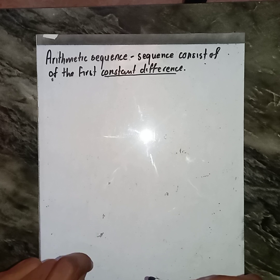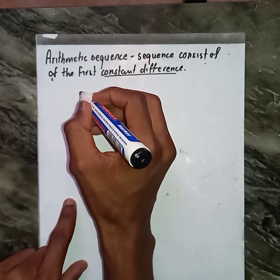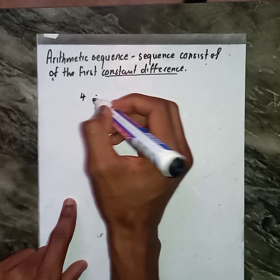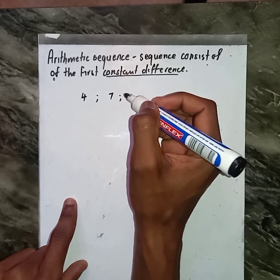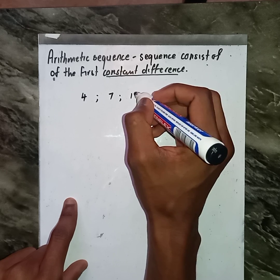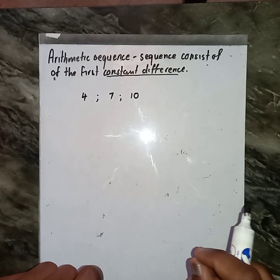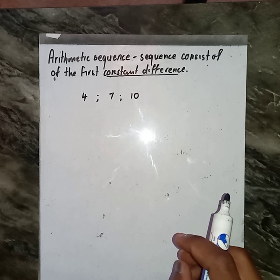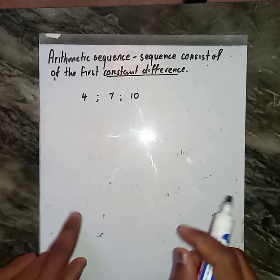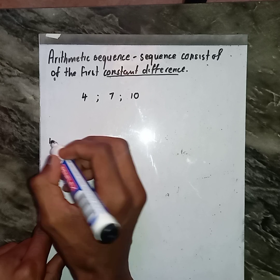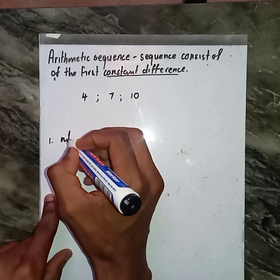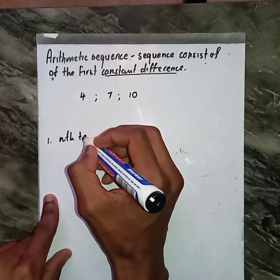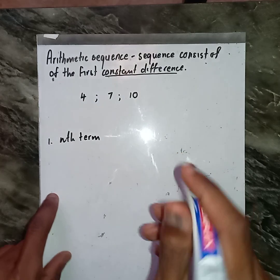Suppose now, if I were to give you this sequence: say we have 4, we have 7, also have 10 somewhere there. Then I ask you the question to determine the general term or the nth term of this given sequence. How are you going to do that?